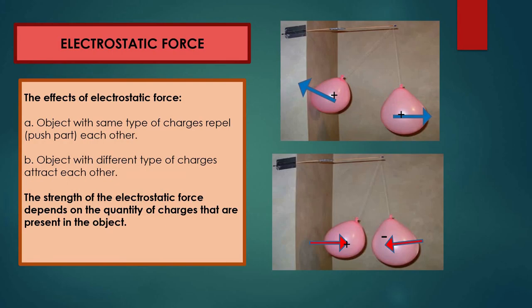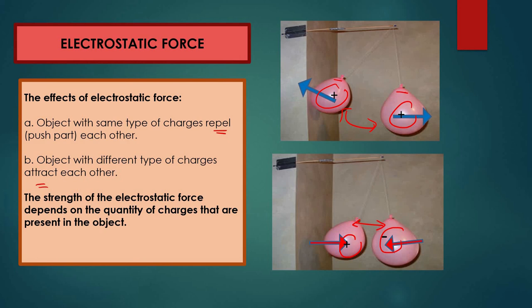In electrostatic force there are two effects: repulsion and attraction. If two objects have the same charges — for example, both positive or both negative — they will repel each other. If they have opposite charges — positive and negative — they will attract each other. The strength of the electrostatic force depends on the quantity of charges present in the object: the higher the charge, the higher the electrostatic force.